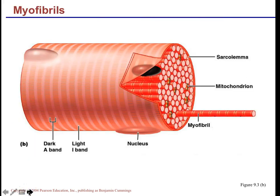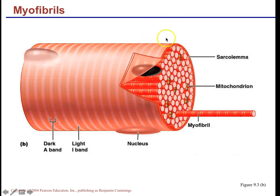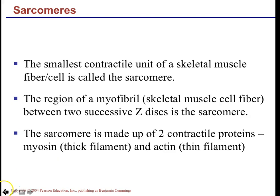A muscle cell shows the dark-light-dark-light striations created by contractile proteins. It is multinucleated, and the outer plasma membrane has a special name: the sarcolemma. Mitochondria are scattered throughout to provide energy for muscle contraction. The bulk of the muscle cell is made up of bundles called myofibrils.